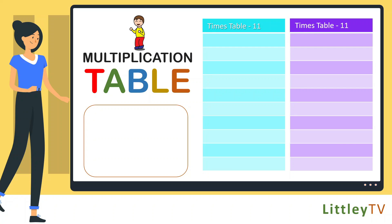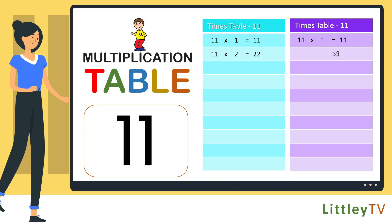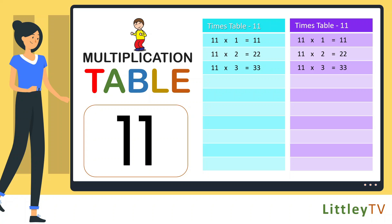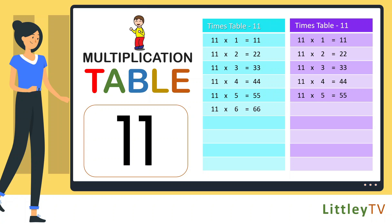Table of 11. 11 ones are 11, 11 twos are 22, 11 threes are 33, 11 fours are 44, 11 fives are 55, 11 sixes are 66.